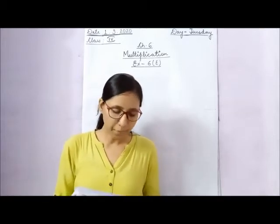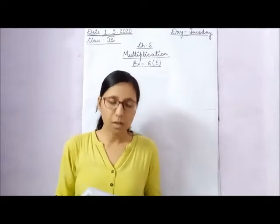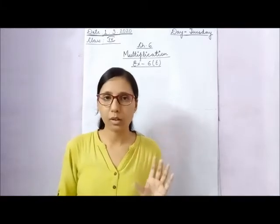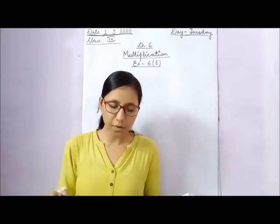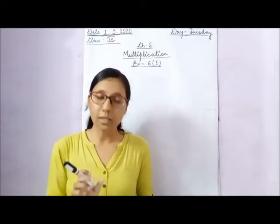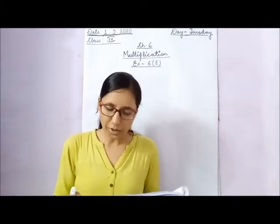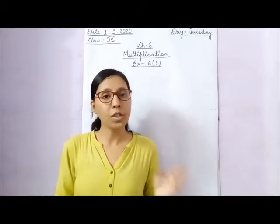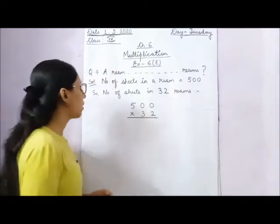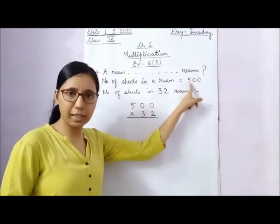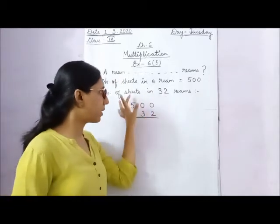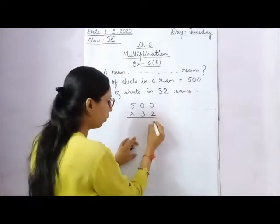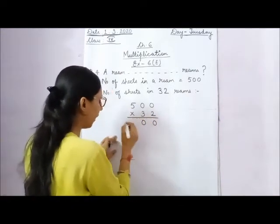Question 4: A ream of paper means 500 sheets of paper. How many sheets are there in 32 reams? We need to multiply 500 by 32. Starting: 2 into 0 is 0, 2 into 0 is 0, and 2 into 5 is 10.